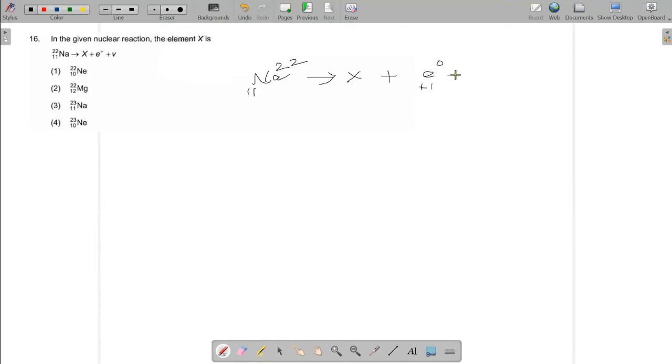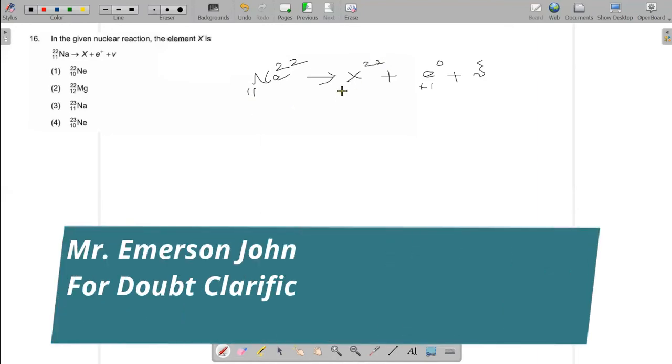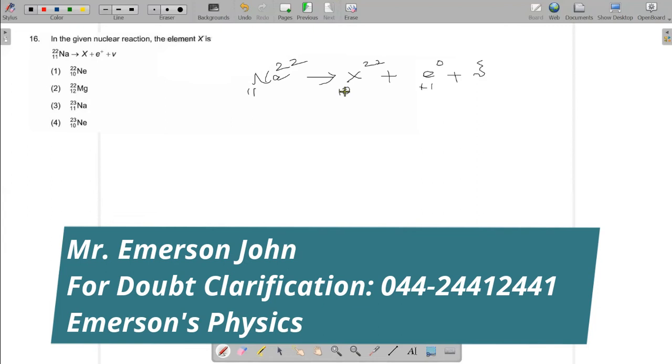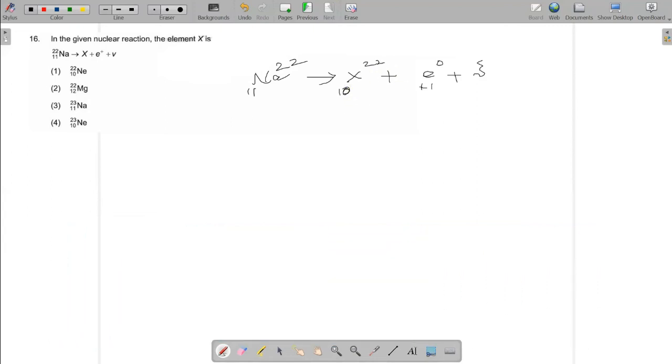And gamma ray. It is clear mass number, there is no change. Atomic number decreased by one number. 22-10, atomic number 10. That is the answer. 22-10 is the answer.